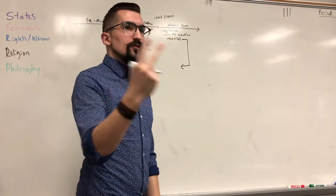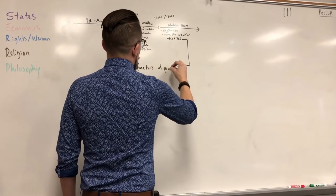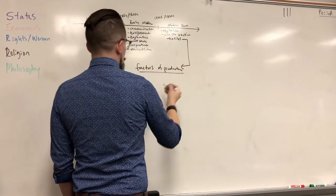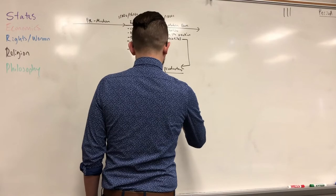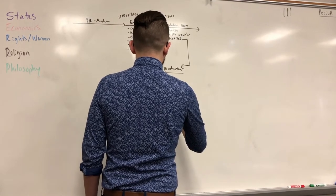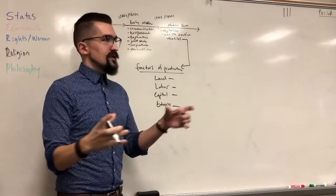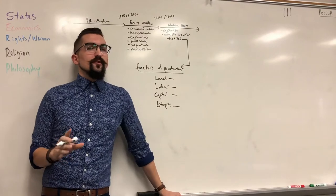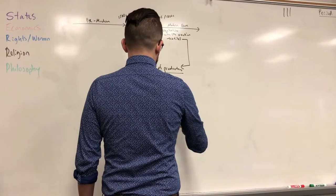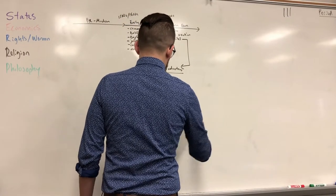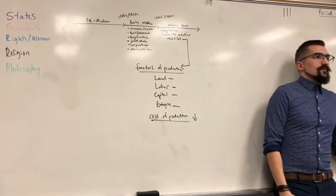The way they did this was by taking the factors of production — land, labor, capital, and enterprise — and condensing them, making them as cheap as they could. That drastically reduces the cost of production. I'm going to talk about how for a second, because all four of these contribute in some way to making something.